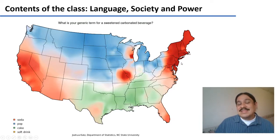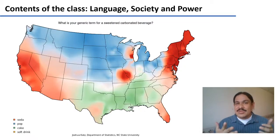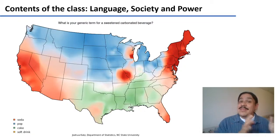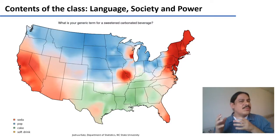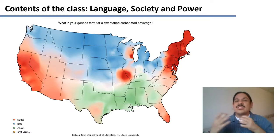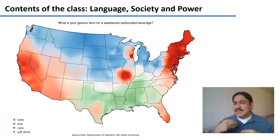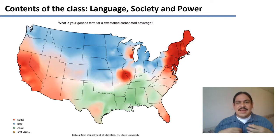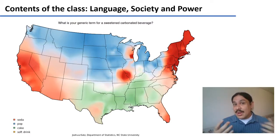The places where you grew up have an influence on how you speak. We'll study that, and we will also study how, unfortunately, people use those differences in how people speak — how they say some words — to discriminate against one another. There's discrimination because of the languages that you speak, because of how you say things, and we will study how those patterns work in order to combat them.